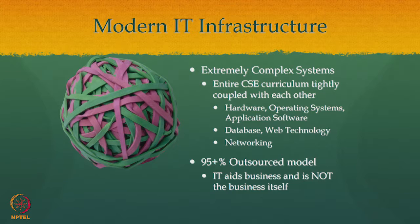Modern IT infrastructure is an extremely complex system. We have just talked about one simple photocopy machine. But if you take a financial institution like a bank, inside the data center you have a database where account numbers and transaction details are stored, a huge set of servers running web applications to access this database, an operating system on which the servers run, and networking connecting everything externally and internally - both LAN and WAN. At least five important components: hardware, software, operating system, web application, database, and networking - each of which is a separate course in a CSE curriculum.